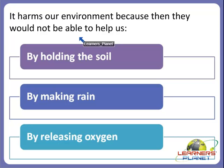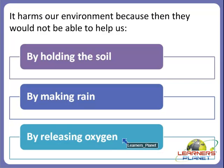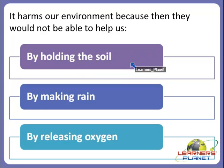Trees would not be able to help us — by holding the soil, by making rain, by releasing oxygen. These would not be possible without trees. If our environment is harmed by cutting down of trees, we would not be getting oxygen gas, we would not be getting rain, and it would not be able to hold the soil. So it is very important for us to plant trees. Always plant more and more trees rather than cutting them.